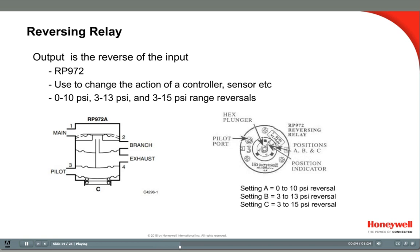There are three pressure settings on the reversing relay. The factory default is position B. In this setting, the RP-972 will reverse a 3-13 signal. This is the most common setting for this relay. Be careful to ensure that the switch is fully clicked into the desired setting for correct operation.